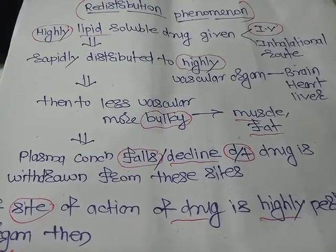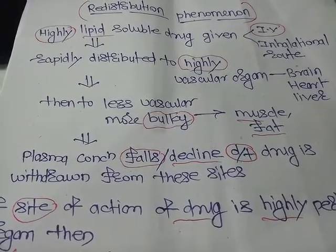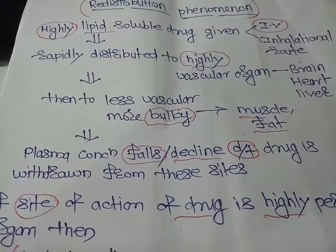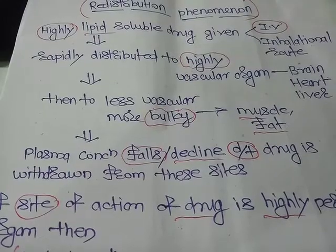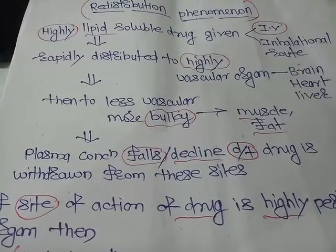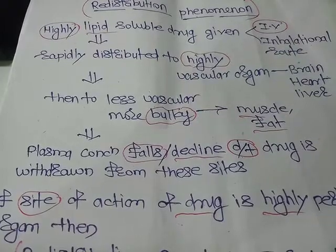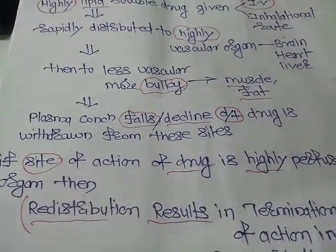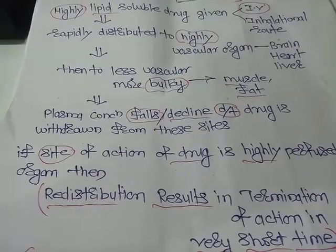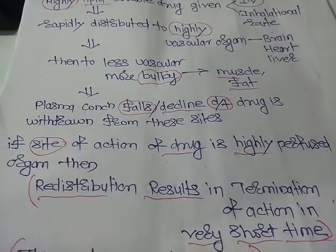Plasma concentration of the drug falls or declines because the drug is withdrawn from the tissues and from the sites. That is why there is a termination of action of the drug. If the site of action of the drug is a highly perfused organ, then redistribution results in termination of action in a very short time.